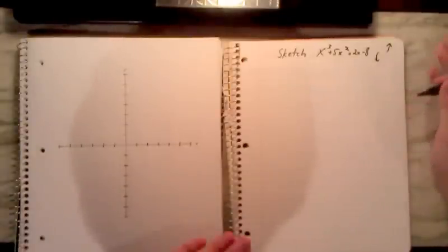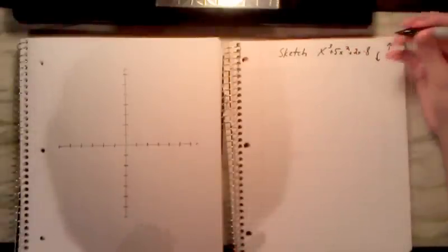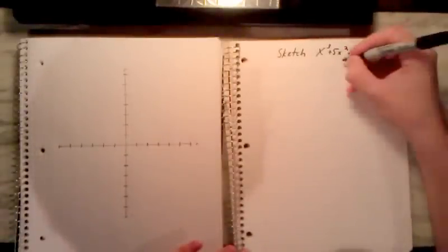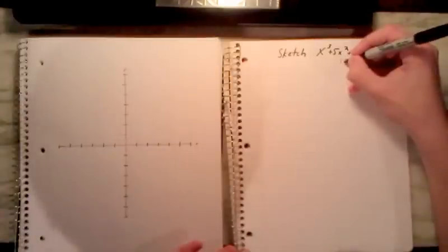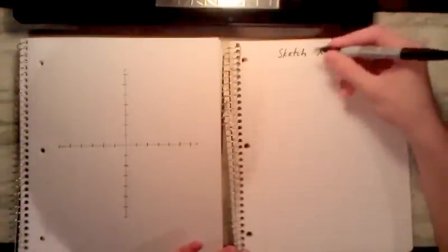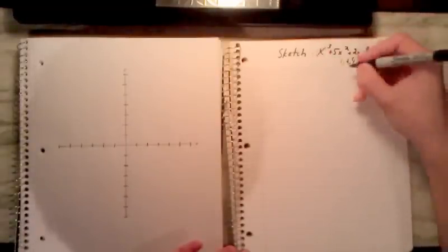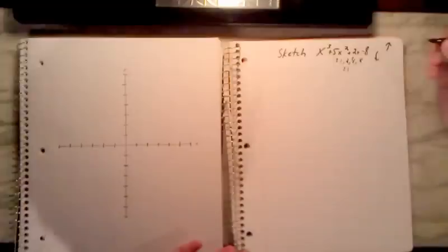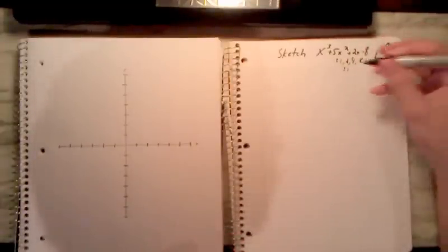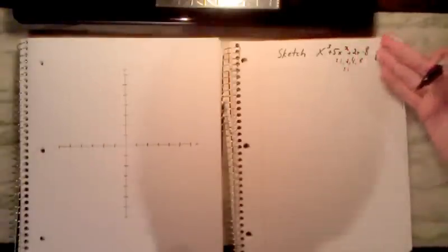Right now, we're going to use the rational zero function, which is where we take the coefficient here, find all the multiplicities, which would be 1, 2 and 4, 8, and for x, the coefficient's 1, which for that we can just get 1, but plus or minus all these, so we can get plus or minus 1, 2, 4, or 8. I don't find a reason to rewrite that when it's 1 over 1, 2 over 1, 4 over 1, and 8 over 1. It's pretty straightforward.